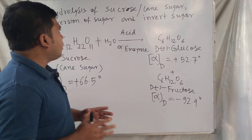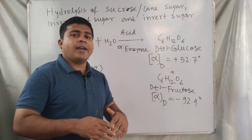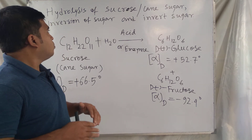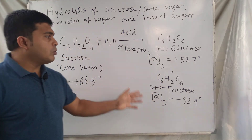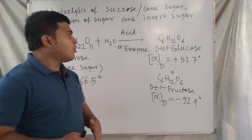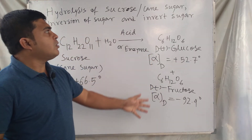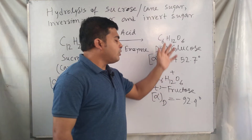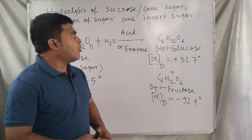This means hydrolysis of sucrose shows inversion of the specific rotation, and this is called the inversion of sugar, because on hydrolysis the specific rotation of sucrose changes from dextrorotatory to levorotatory. The resulting equimolar mixture of D-plus glucose and D-minus fructose formed is called invert sugar.